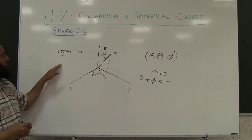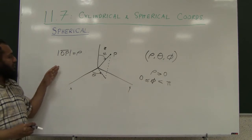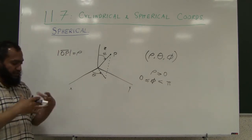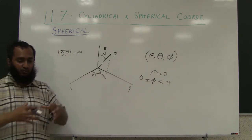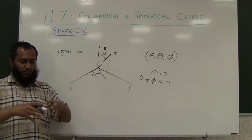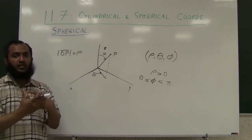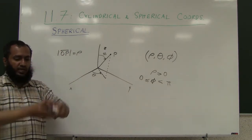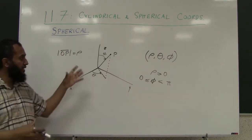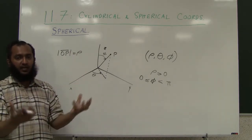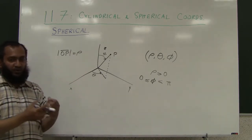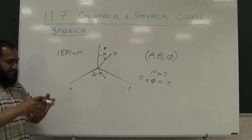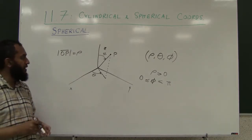Now let's talk about when you use the spherical coordinate system. As the name implies, we use it when dealing with 3D objects that are more symmetric around a single point, as opposed to around an axis. Around an axis would be cylindrical; around a point would be spherical. They don't have to be perfect spheres — they could be elliptical — but the idea is something like that.